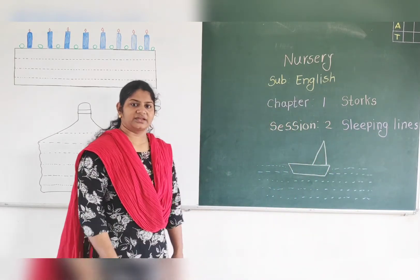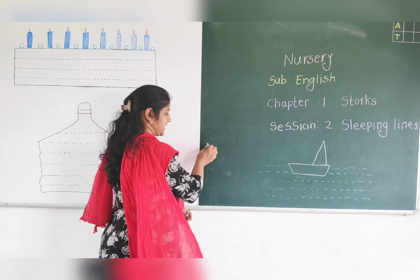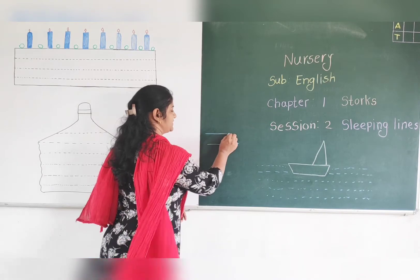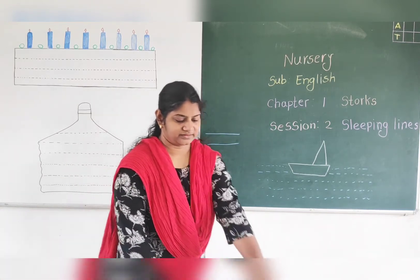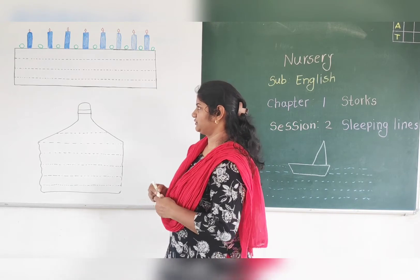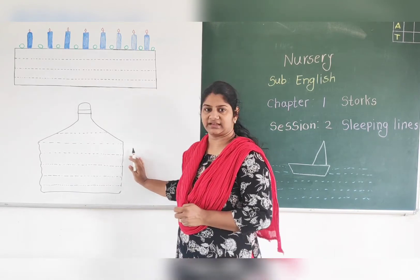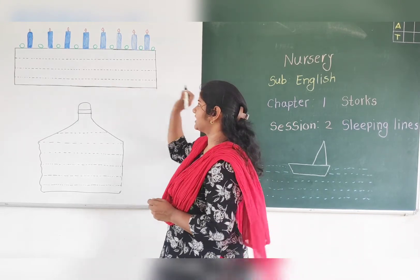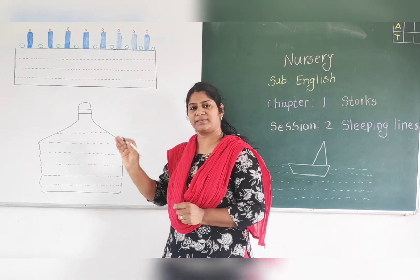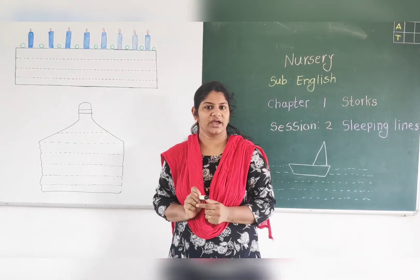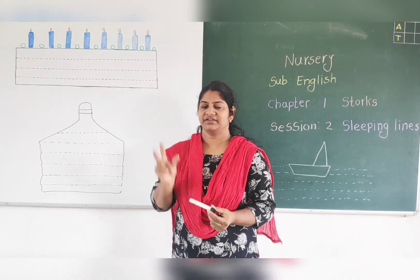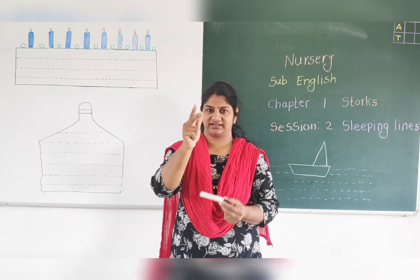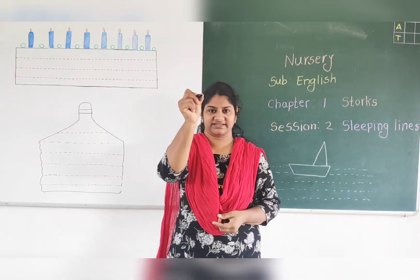Now I am going to draw it — left to right, left to right. I am going to draw your sleeping line. These are doorway lines. Now I am going to join the lines and draw the sleeping line. How do you hold the pencil? With three fingers — thumb, index, and middle — like this.